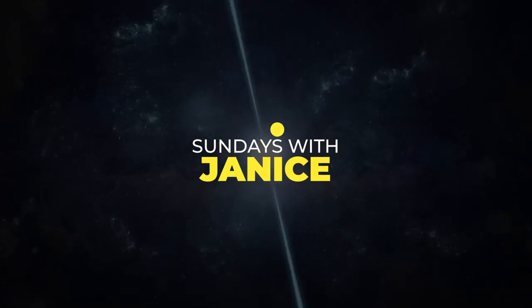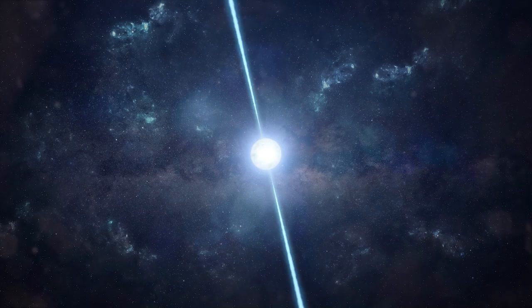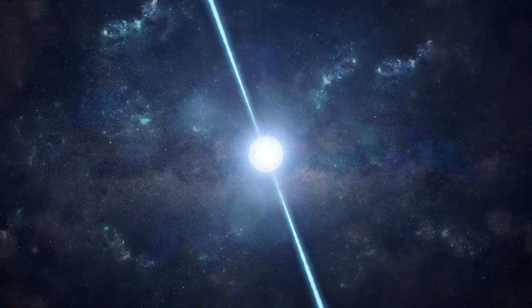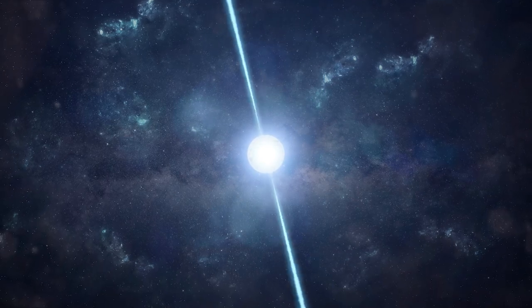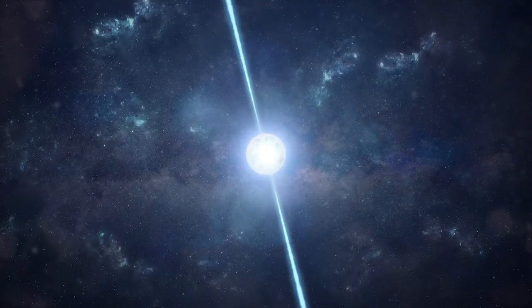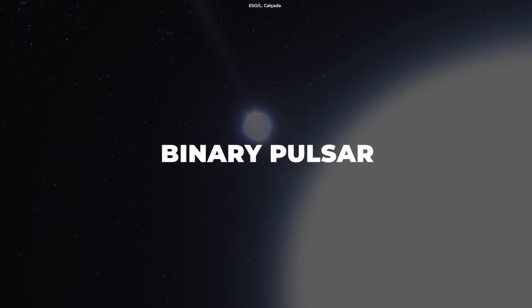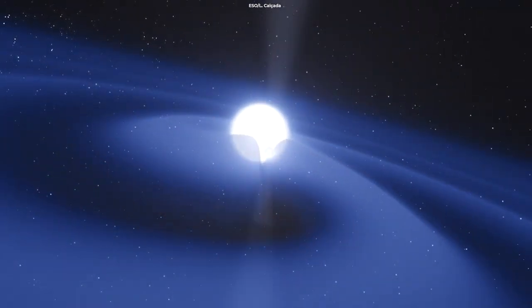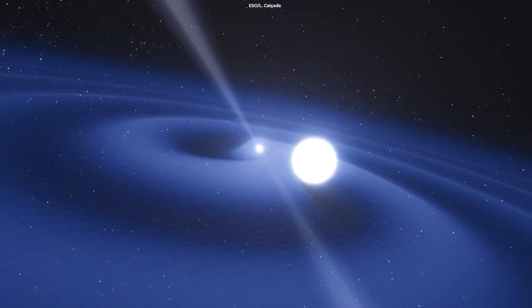Pulsars are rotating neutron stars observed to have radiation pulses at very regular intervals that typically range from milliseconds to seconds. A binary pulsar has an additional feature of a binary companion, which is often a white dwarf or a neutron star.